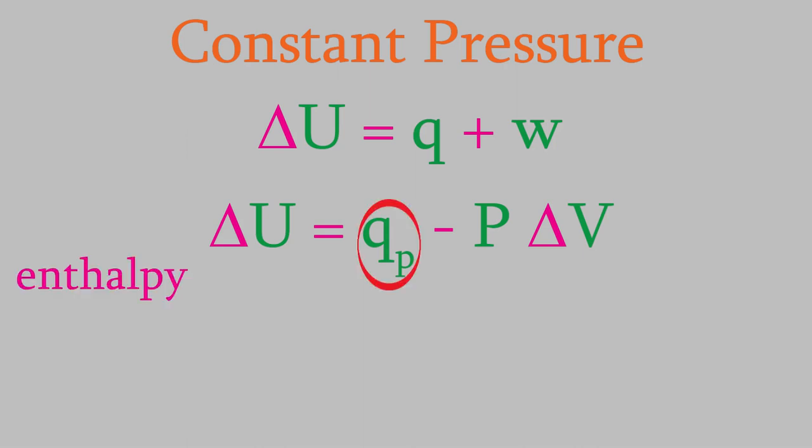The heat exchanged under conditions of constant pressure has a special name, the enthalpy, and it has its own symbol, which is delta H. You probably remember talking about the enthalpy in other classes going right back to general chemistry, and you may have thought the enthalpy is synonymous with heat. However, now we can see that the enthalpy is only equal to the heat under conditions of constant pressure. If the pressure varies, delta H won't be equal to the heat. We'll see how to calculate the heat under conditions of varying pressure in a future video.